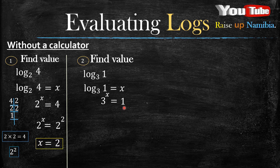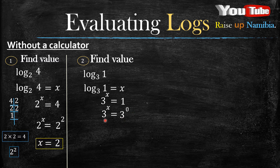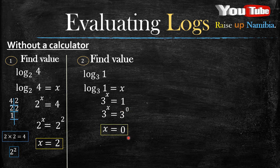From our laws of indices, we spoke about a law that says any number raised to the power zero is one. So each time you have a 1 and you need to make the bases the same, you check what base is on the other side — it's a 3 — and you raise that base to zero, because anything raised to the power zero is just 1. Even 20 raised to the power zero is 1, or 500 raised to the power zero is still 1. Now our bases are the same, so our exponents are equal: x equals zero, and that's your final answer.